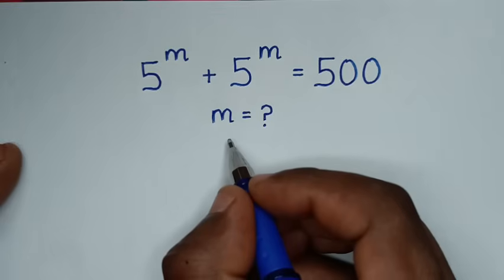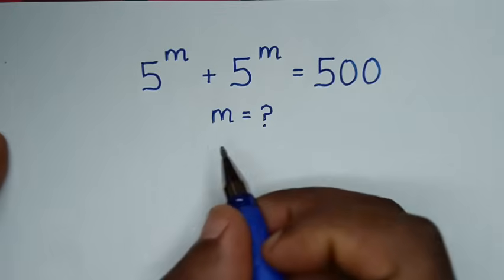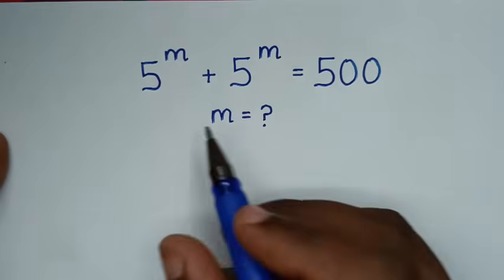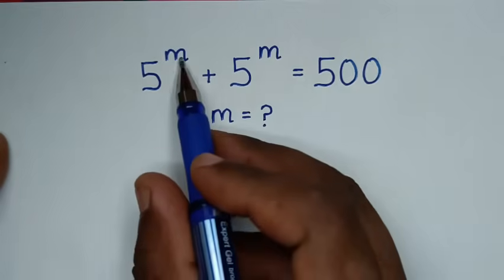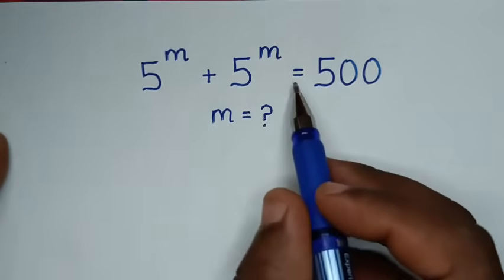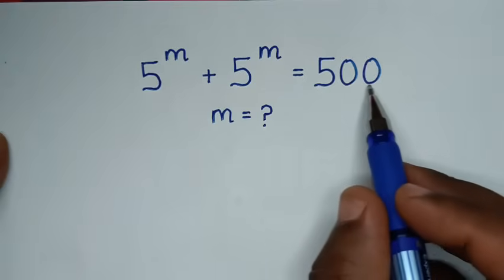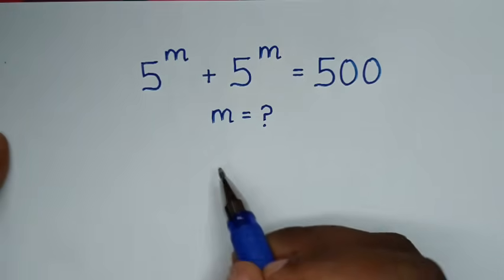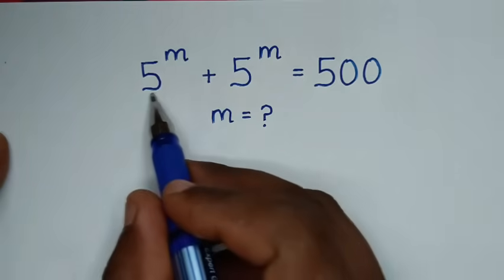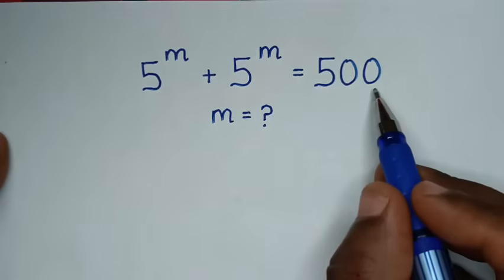Hello, you are welcome to solve this math problem, which is 5 power of m plus 5 power of m is equal to 500. To find the value of m from this equation.